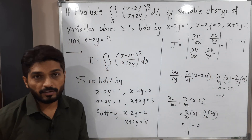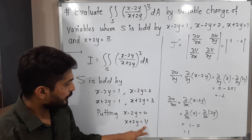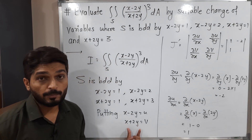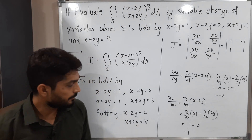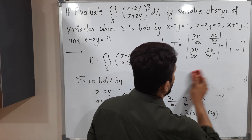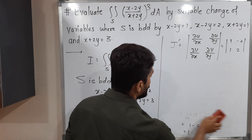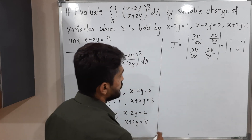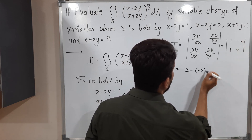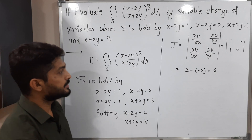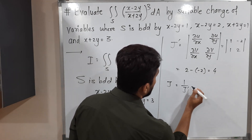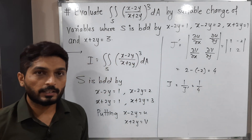Since v = x plus 2y: ∂v/∂x = 1 (derivative of x is 1, 2y is constant). And ∂v/∂y = 2 (x is constant, derivative of 2y is 2). Solving the determinant: 1 × 2 minus (−2) × 1 = 2 + 2 = 4. So J' = 4. Since J = 1 / J', we get J = 1/4.